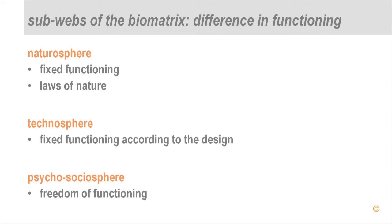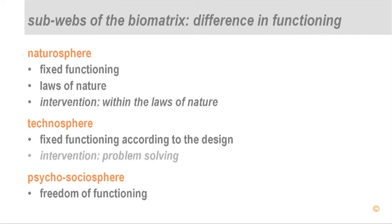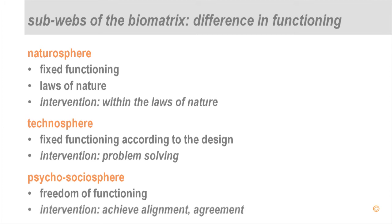Why is that distinction important? Because if I am intervening in systems in the natural sphere, I have to do so within the functioning of the natural sphere. In the technosphere, I have to problem-solve according to the design of the technology, or if doing a new design, I have to abide by the laws of nature. In the psychosocial sphere, what we have to achieve is alignment — if we want cultural, economic, or political systems that work, we have to achieve agreement between entity systems. So we need different kinds of methods to manage change, design, or analyse systems across these spheres.